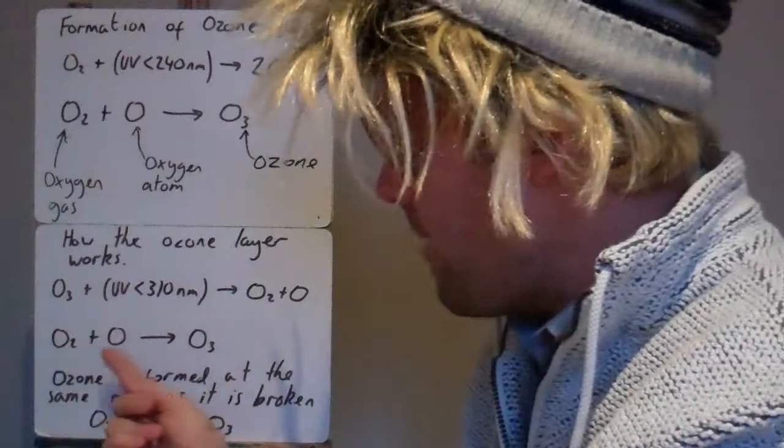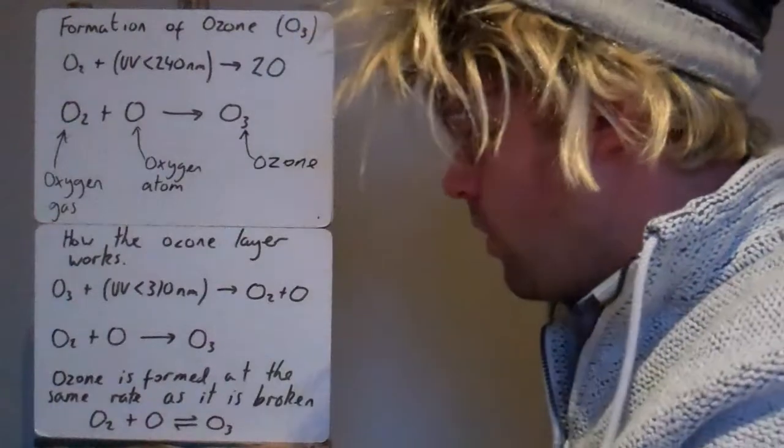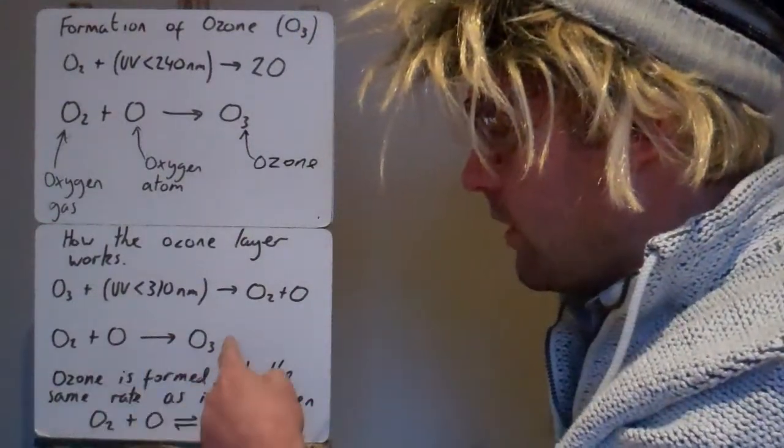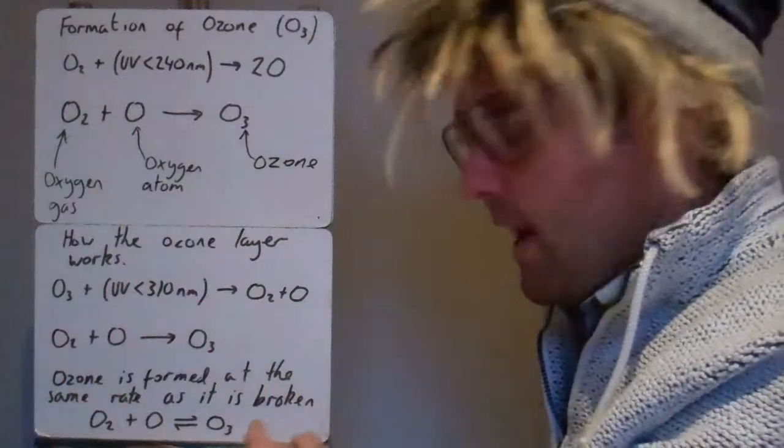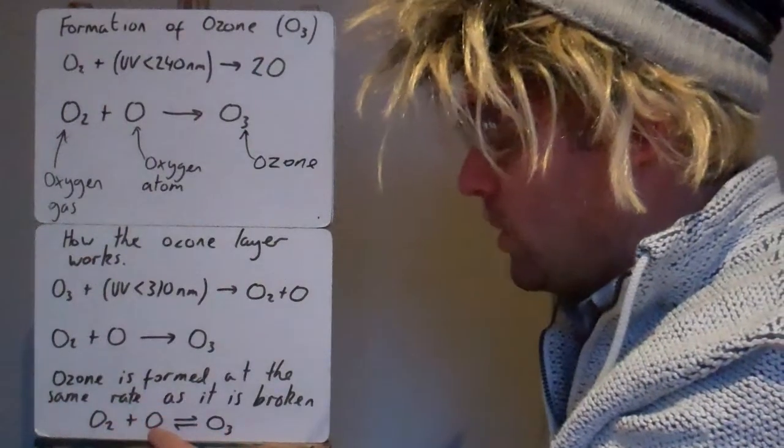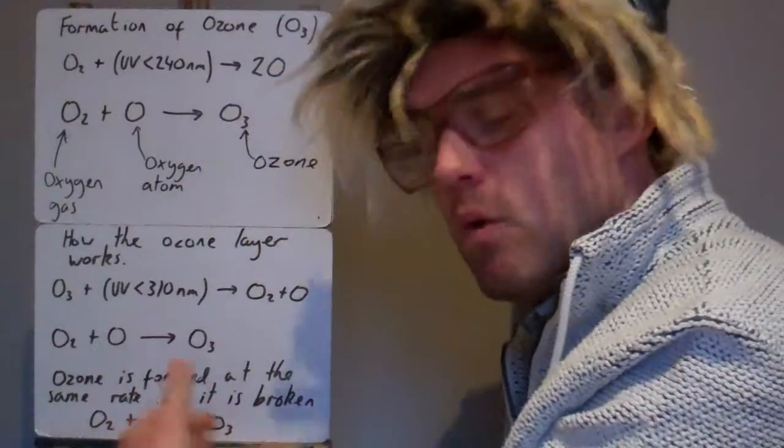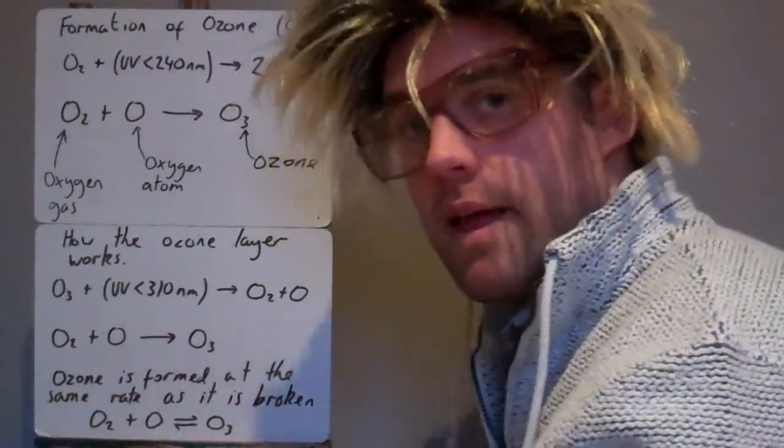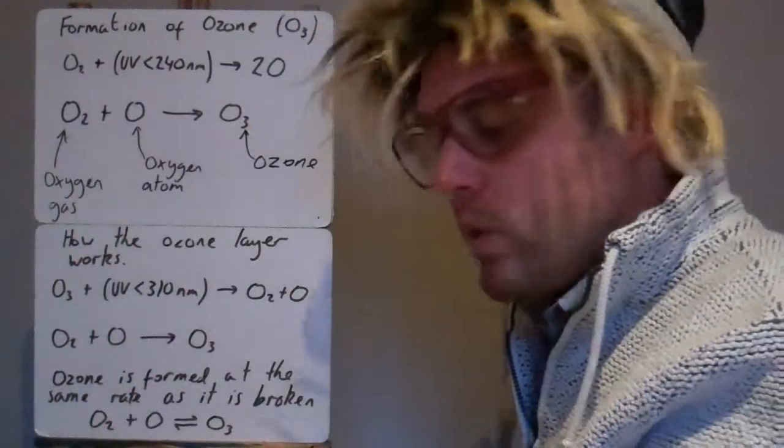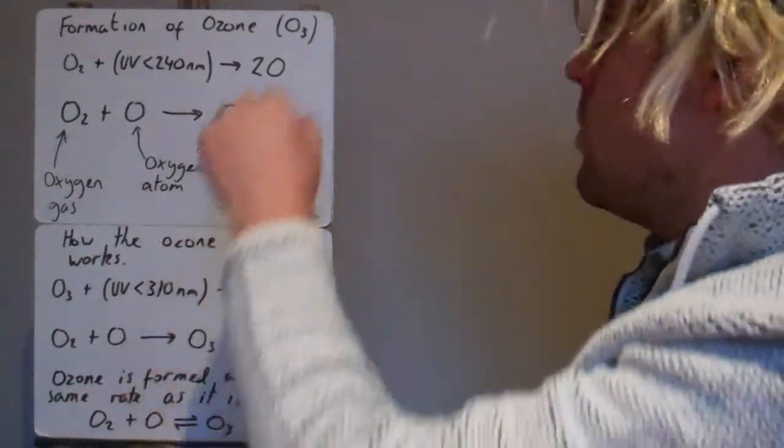Now those two will react quickly again to reform the ozone. So what we have is the ozone is being formed at the same rate as it is broken, and it's in equilibrium. So O2, oxygen gas with an oxygen atom, is making an ozone molecule and that can go back again. So this equilibrium is naturally there and what it does is it filters out the UV so it doesn't reach us. That's really important for life on Earth.